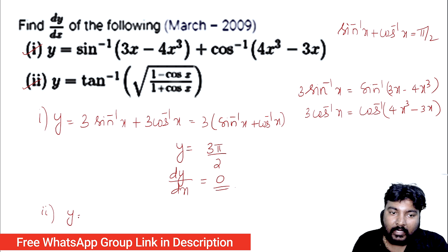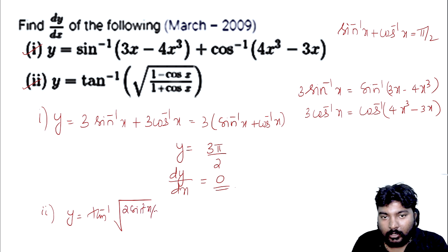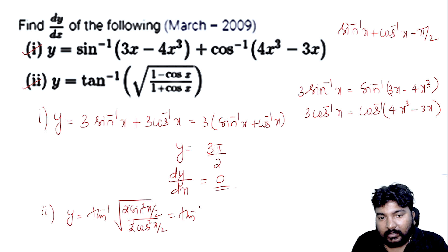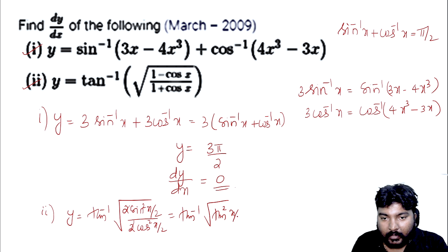Second part: y equals tan⁻¹ of root of (1 minus cos x) over (1 plus cos x). Using half angle formulae: 1 minus cos x equals 2 sin²(x/2), and 1 plus cos x equals 2 cos²(x/2). The 2's cancel. We get tan⁻¹ of root of sin²(x/2) over cos²(x/2), which is root of tan²(x/2).